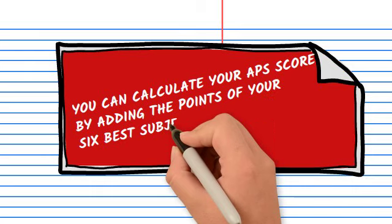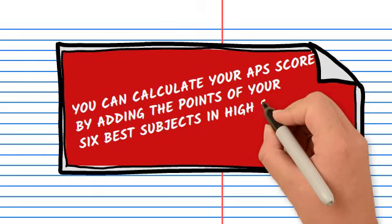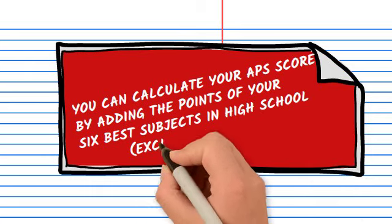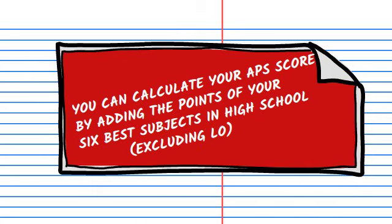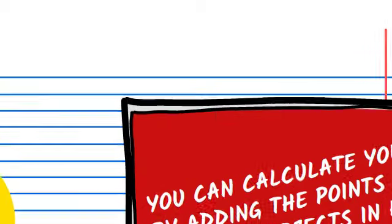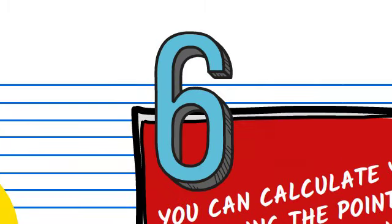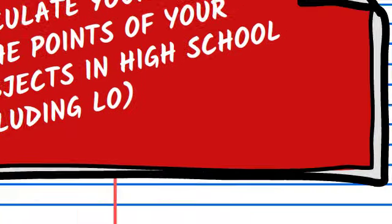You can calculate your APS score by adding the points of your six best subjects in high school, but this has to exclude Life Orientation.